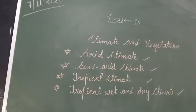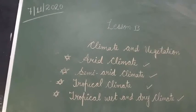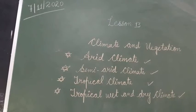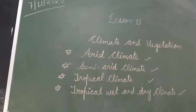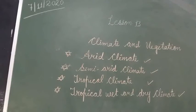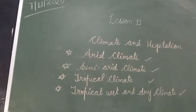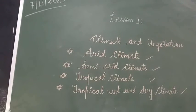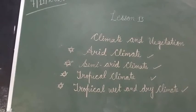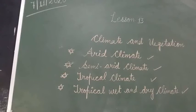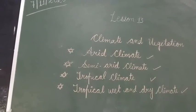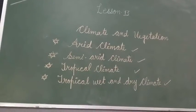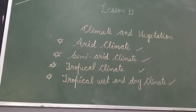Arid means dry. The word arid comes from the Latin word 'aridus,' which means dry or parched. This area is not suitable for permanent agriculture and the most common vegetation here is grass. Even in the month of December, when most areas of our country have winter season, this region still has a hot and dry season. The months of March and May are extremely hot and dry.